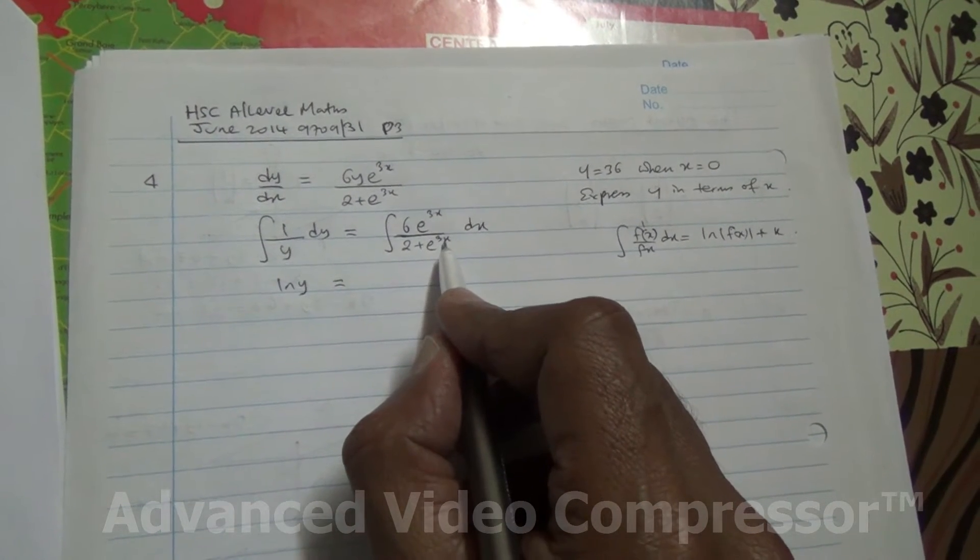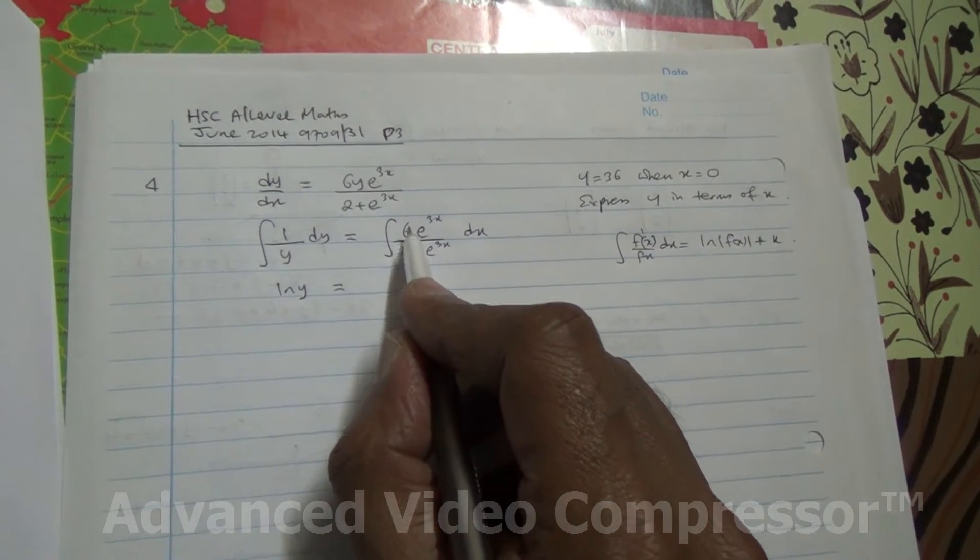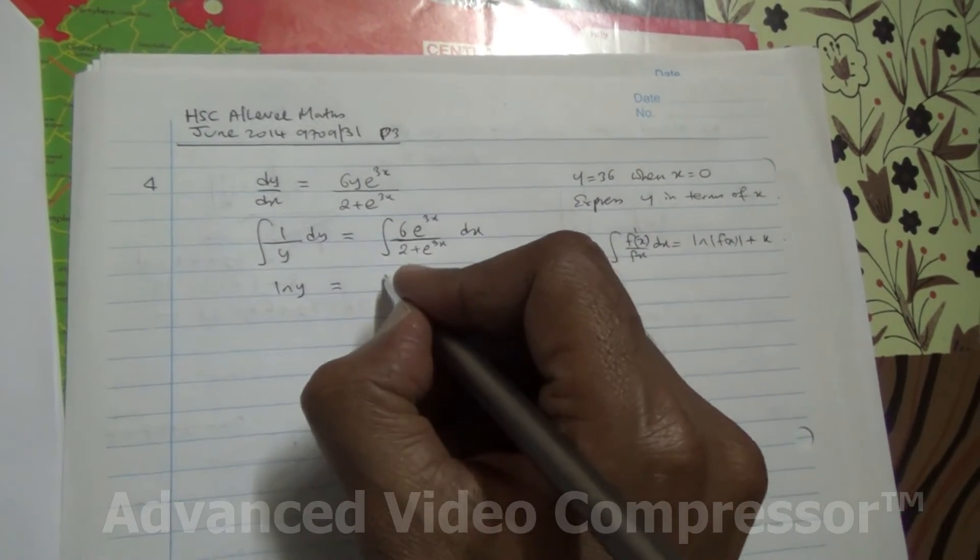So, if we differentiate this, we're going to get e to the 3x, 3e to the 3x. But it is 6e to the 3x. So, maybe I can factorise this, I can put 2 outside,